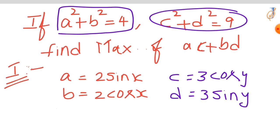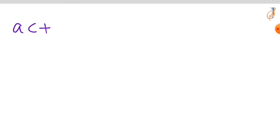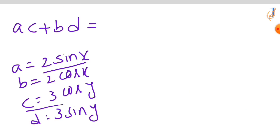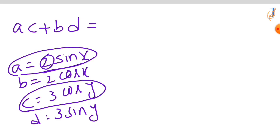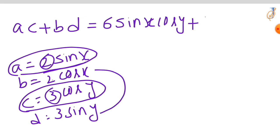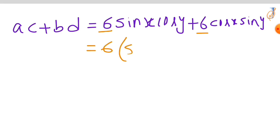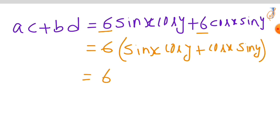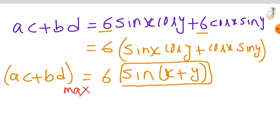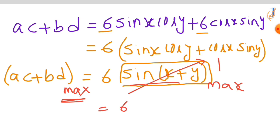Now let's find the maximum value of ac plus bd. So a is 2 sin x and c is 3 cos y; multiplying gives 6 sin x cos y. Similarly, bd is 2 cos x times 3 sin y, which is 6 cos x sin y. Taking 6 as common, we are left with sin x cos y plus cos x sin y, which by the addition formula equals sin(x plus y). The maximum value of sin(x+y) is 1, so 6 times 1 gives a maximum value of ac plus bd equal to 6.